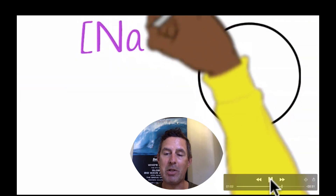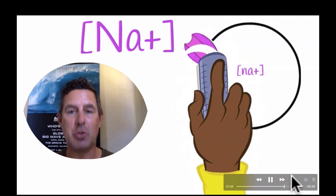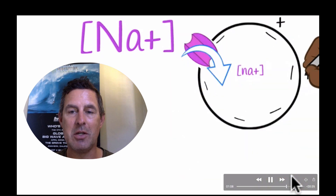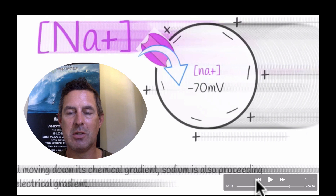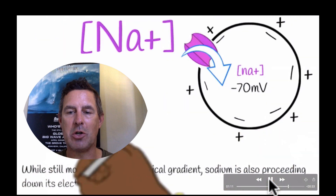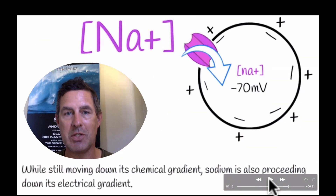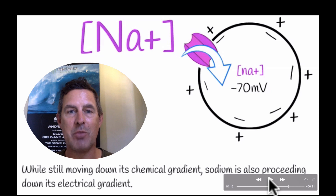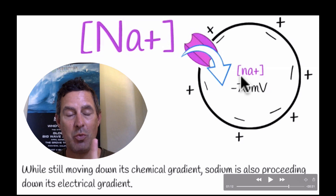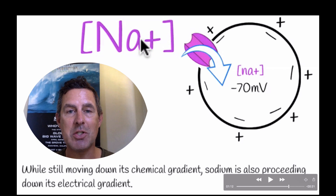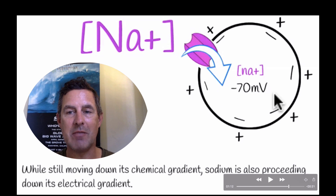So if we apply those principles to sodium, once again, I'm going to draw the same cell right here. The only difference is I am showing you that this cell has a negative charge on the interior of the cell. Now we see two variables that are influencing the movement of sodium into that cell. First off, we have sodium wanting to move down its chemical gradient, which is what we just spoke about. But also, the positive charge on sodium is attracted to the negativity on the inside of the cell.